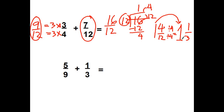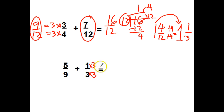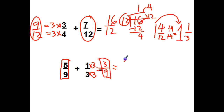5 ninths plus 1 third. What can I do to the 3 to change it to a 9? Times 3. Top times 3. This fraction equals 3 ninths. And I got 5 ninths plus 3 ninths equals 8 ninths, and it's as simple as it can go.